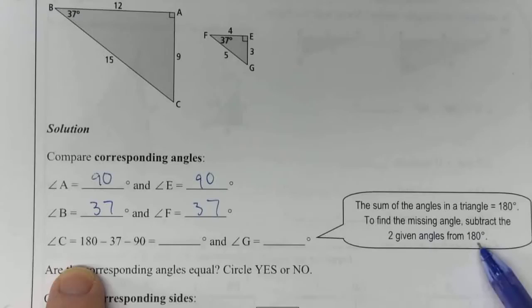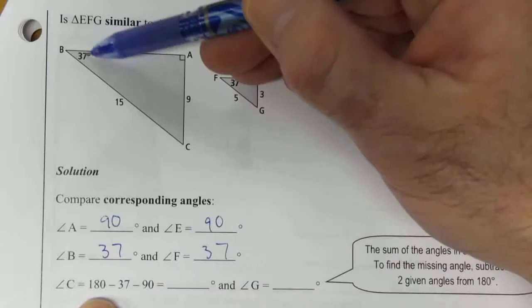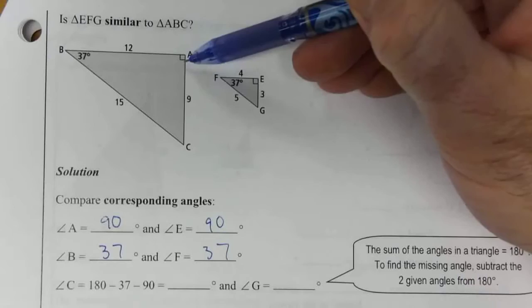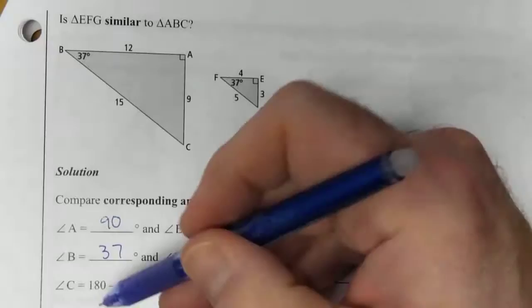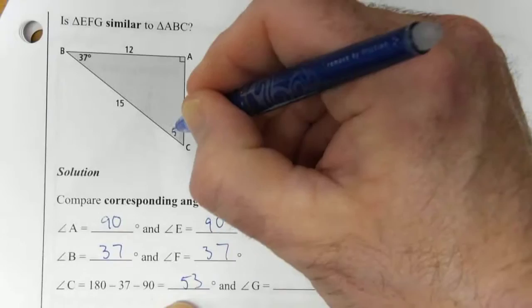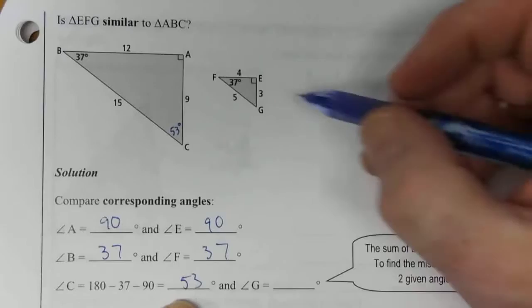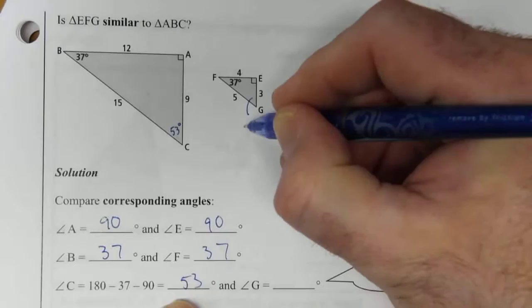So in this case, we can take 180, subtract the 37 that we know, subtract the 90 that we know, and then that will give us the remaining amount. And so in this case, that's going to be 53 degrees. 180 minus this 37 minus the 90 gives you 53 degrees. So this one here is 53 degrees, and we know that the angles are the same in this one, so we can say that that is also 53 degrees.